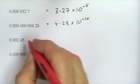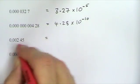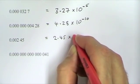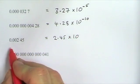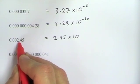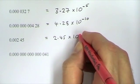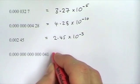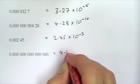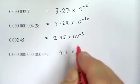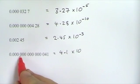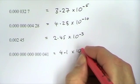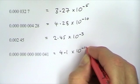Our next one: the number part is 2.45, and the decimal place has moved 3 places, so it's 2.45 times 10 to the minus 3. And our last one: the number part is 4.1, and the decimal place has moved 14 places, so it's 4.1 times 10 to the minus 14.